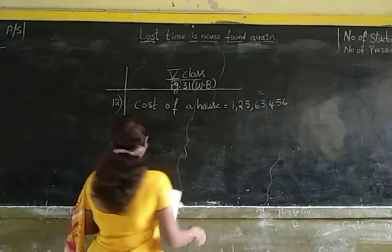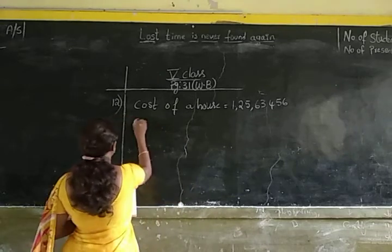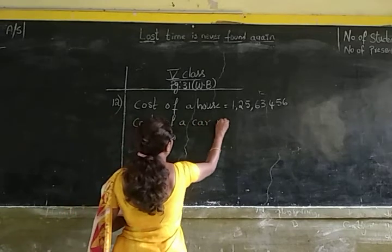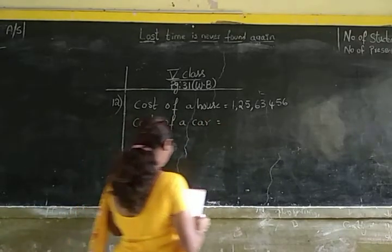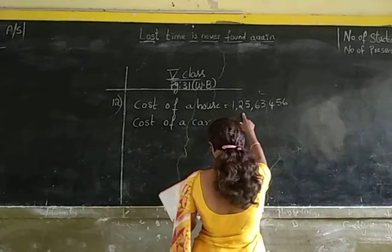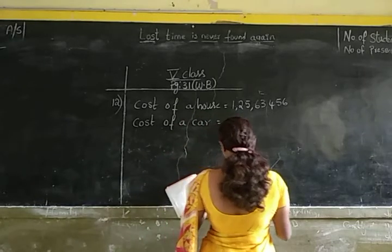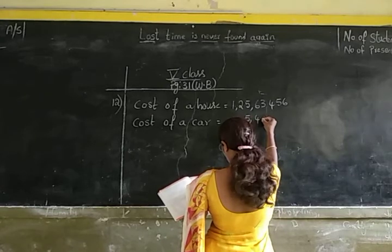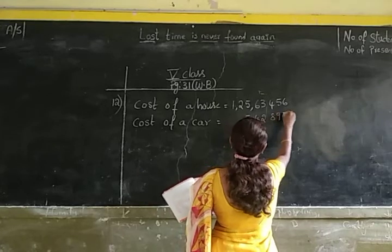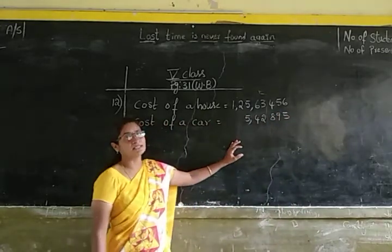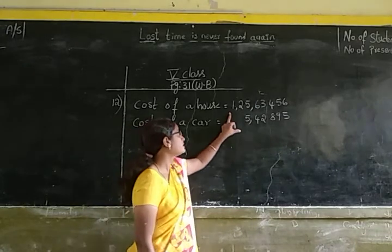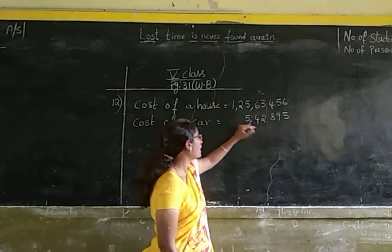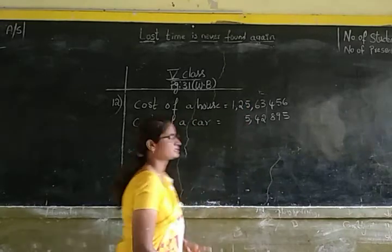Next, we have to purchase a car. So let us write down: cost of a car is 5 lakhs 42,895. Here we have to properly arrange the numbers in columns, because this number is starting from crore place and this number is starting from lakhs place. So you have to write this number from the last place.